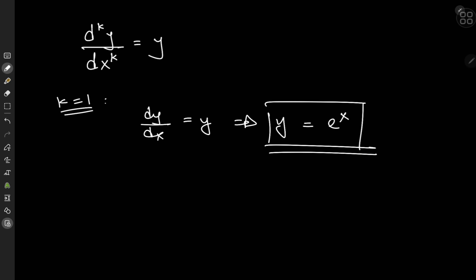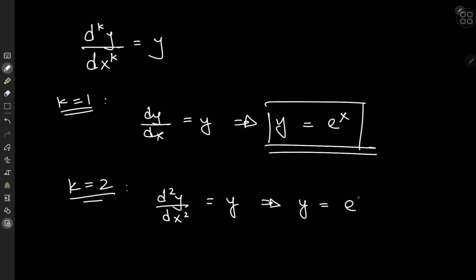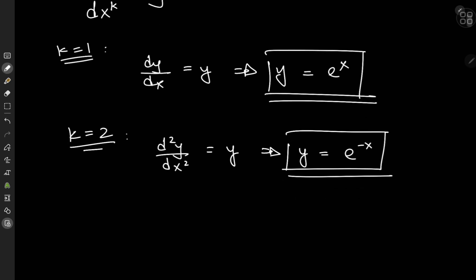What if we move into the realm of k equal to 2? If we differentiate y twice with respect to x, we expect to get exactly the same function back. A function that works here is y equal to e to the negative x. Differentiate this once, you get negative e to the negative x, and differentiate again, you get another negative sign that cancels out. So the second derivative gives back y equal to e to the negative x. We'll skip k equal to 3 for now and come back to it after the general case discussion.